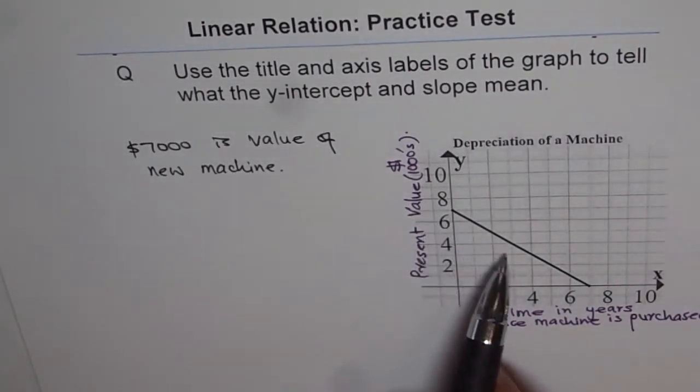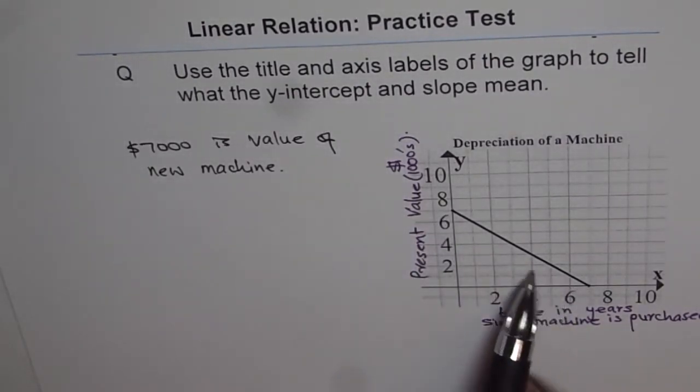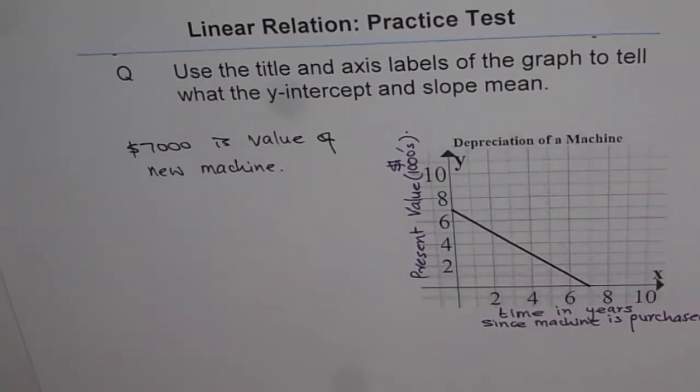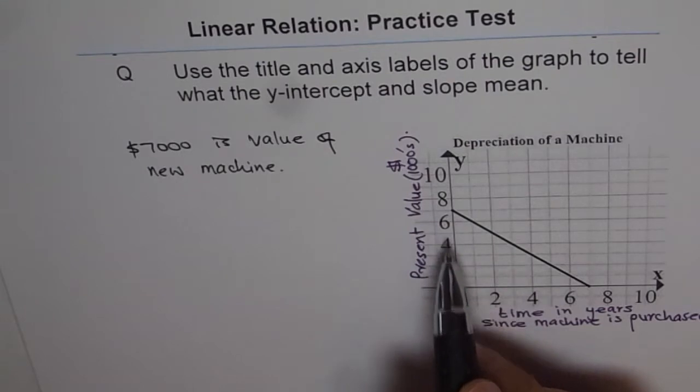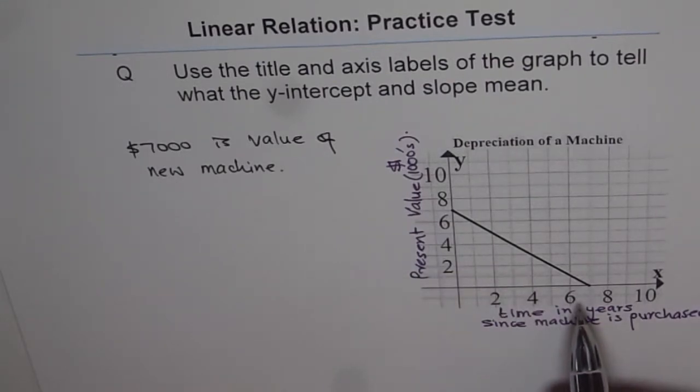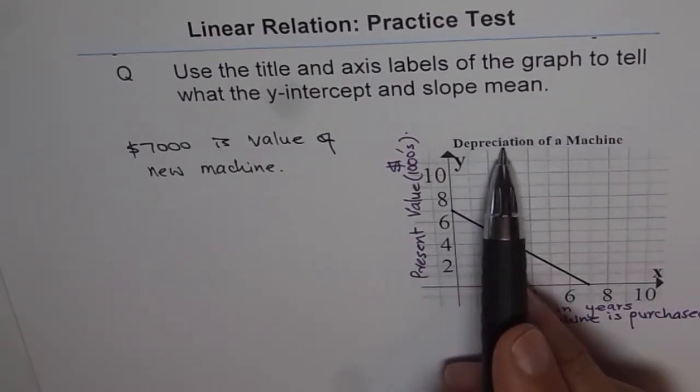You can see that value decreases with time. And since the slope is constant, it is decreasing at a constant rate. If you find this slope, we will know at what rate the cost is decreasing. That is called depreciation.